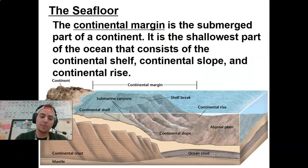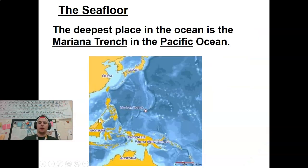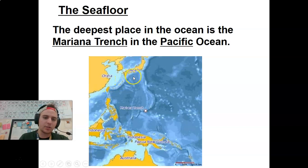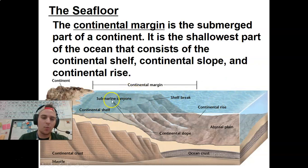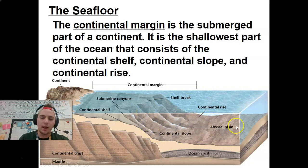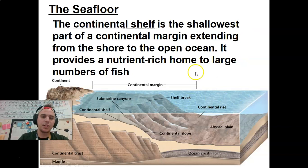The continental margin is the submerged part of a continent — the chunk of land that is still underwater before the continental shelf. When you look at a map, the very light areas next to continents show shallower water, and as you get past, say, Japan, it gets much darker, showing depth. The continental shelf then drops off the continental slope into the deep ocean, and the bottom of those deep places is called the abyssal plain. The continental shelf is the shallowest part of a continental margin, extending from the shore to the open ocean.